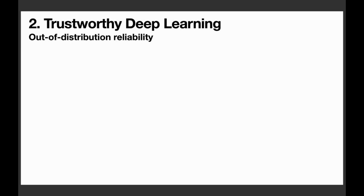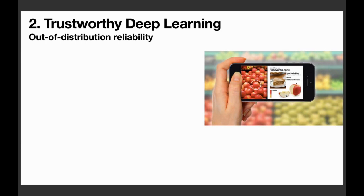Let's move on to the second topic here, which is trustworthy deep learning. I'll be covering three subtopics underneath. The first one is out of distribution reliability, which my lab has been prominently focusing on. I'm very excited about this topic, so I would like to motivate this problem in the following scenario.